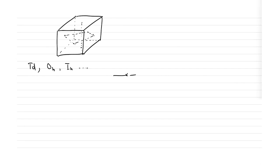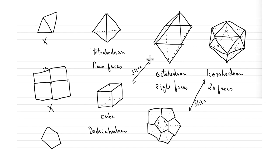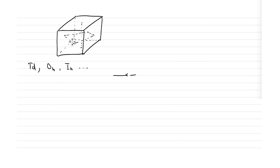Any molecular shape related to these regular polyhedra can be categorized into these cubic point groups. Understanding these shapes is important because these are highly symmetric point groups with a large number of operations. If you know that a molecular shape is close to any of these, you can immediately identify the point group and locate all symmetry operations. That's all for today — we'll continue in the next class with symmetry elements and operations for these point groups.